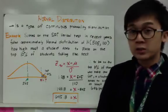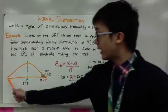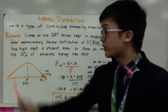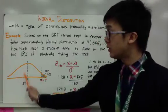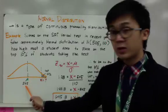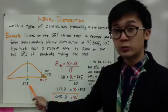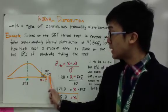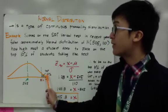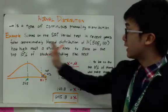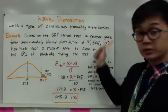Since this is a normal distribution, we can represent it as a graphical display similar to this one. So this is your normal distribution with the mean at 505 points, and we are concerned about finding the actual score of a student to be on the top 10% of the SAT that is being taken in these recent years using this normal distribution.